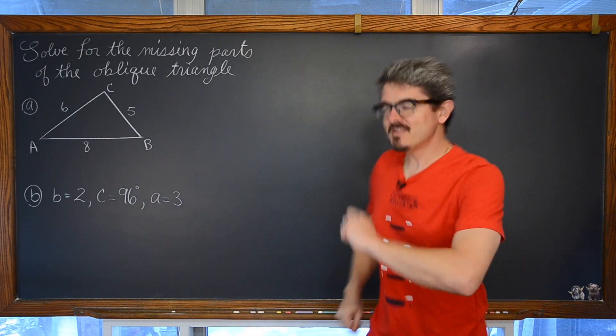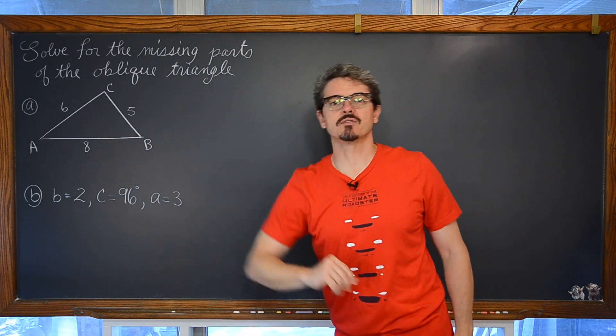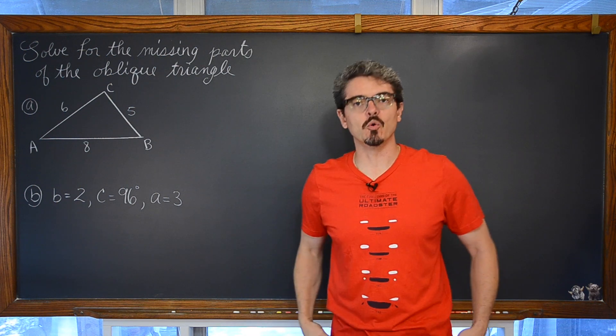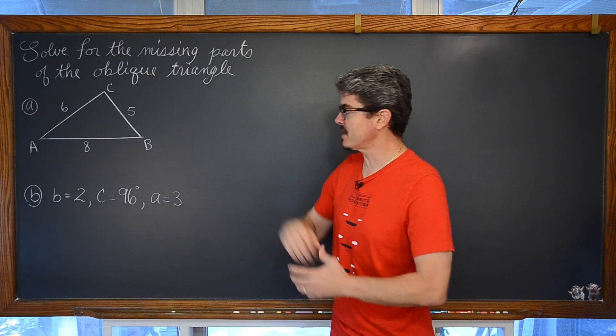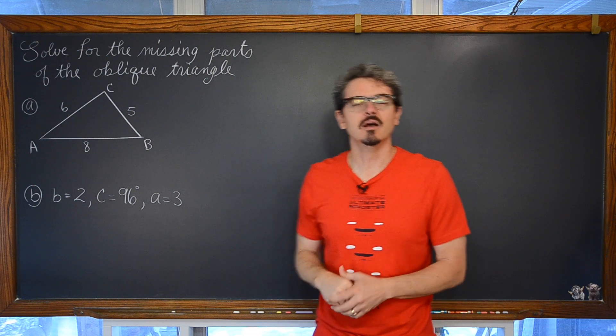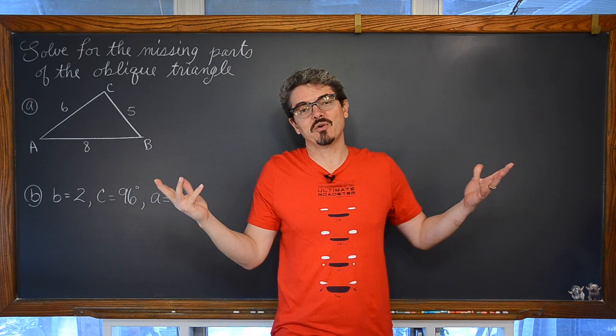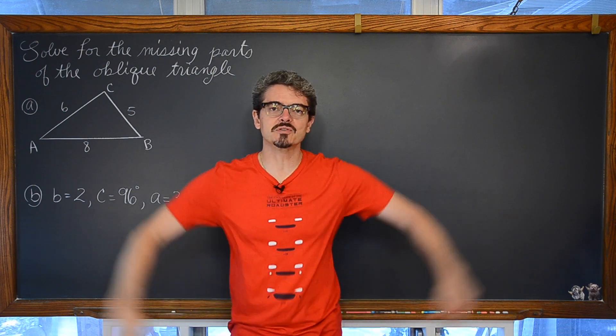BAM! Mr. Tarrou! In this video we are going to take a look at two examples of solving for the missing parts of oblique triangles using either Law of Cosine or Law of Sine. Actually it is going to be a lot of Law of Cosine because that is what the point of this video is to introduce the Law of Cosine.